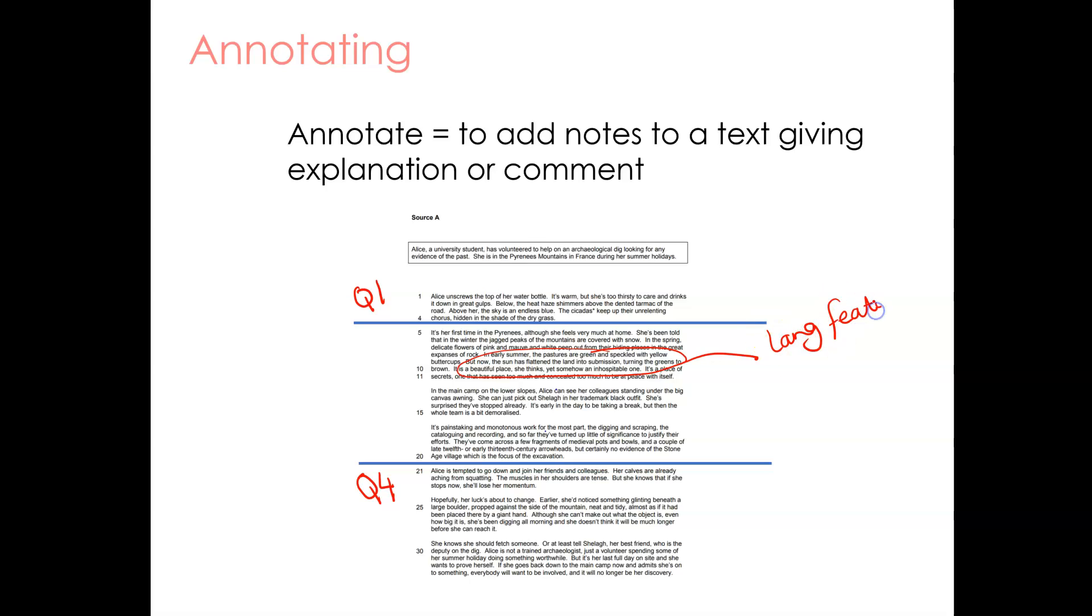So I could label whether it's a language feature. I could put in my connotations. Maybe over here there's something about a character. So I might want to write about the character. What I can infer about them. It might be that I just want to write a short paragraph summary, one sentence. Even a couple of words. I could talk about the tone, the atmosphere.